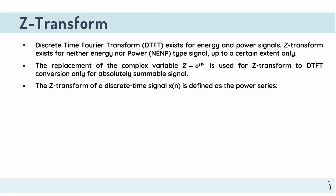We define the Z-transform with x of n. X of Z equals the summation from n equals minus infinity to plus infinity of x of n times z to the power of negative n. This is the main formula for the Z-transform.